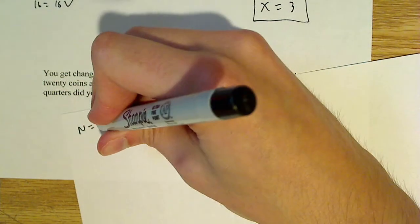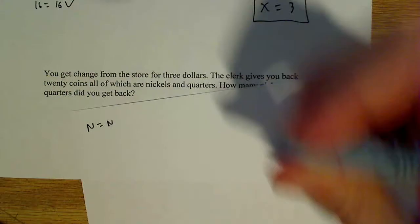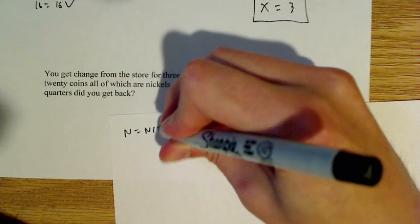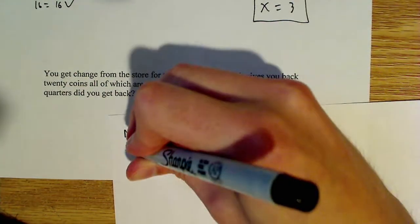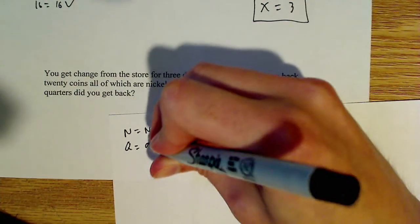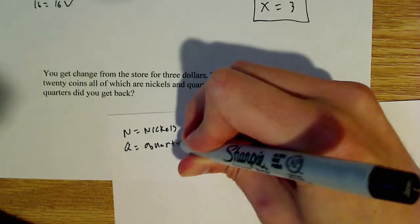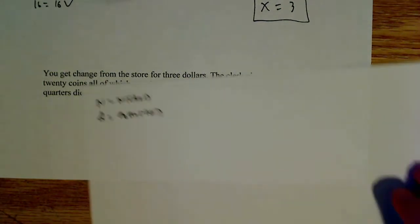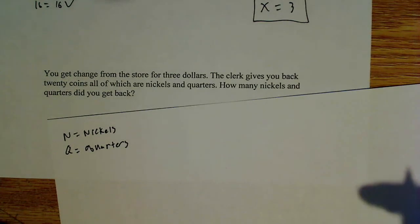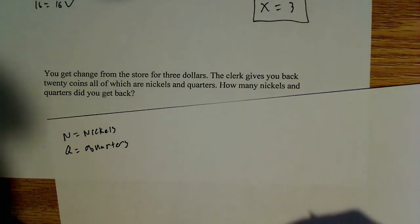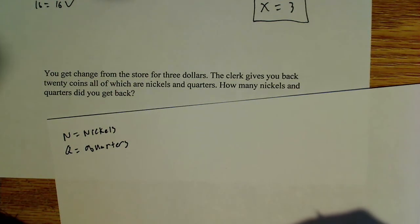So I guess I should say let n equal the nickels and let q equal the quarters. That's the first part I'm going to do here is just define those two. And then once I have those two defined, I'm simply going to start writing my equations.